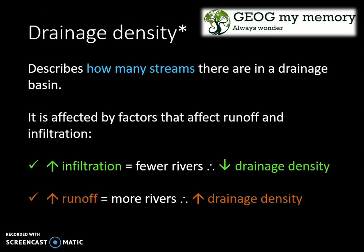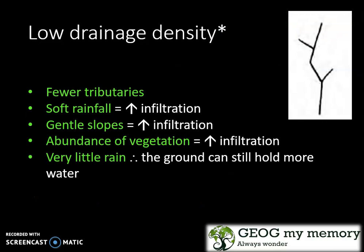Drainage density describes how many streams there are in a drainage basin, and this is affected by factors that affect your runoff and infiltration. When you have an increase in infiltration, there are fewer rivers, which results in a lower drainage density. When there's an increase in your runoff, you have more rivers and an increase in drainage density.